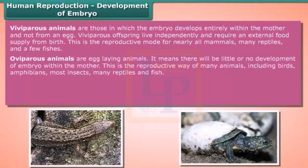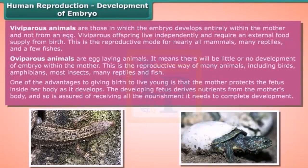Oviparous animals are egg-laying animals, meaning there is little or no development of the embryo within the mother. This is the reproductive way of many animals including birds, amphibians, most insects, many reptiles, and fish. One advantage of giving birth to live young is that the mother protects the fetus inside her body as it develops, and the developing fetus derives nutrients from the mother's body, ensuring it receives all the nourishment it needs.